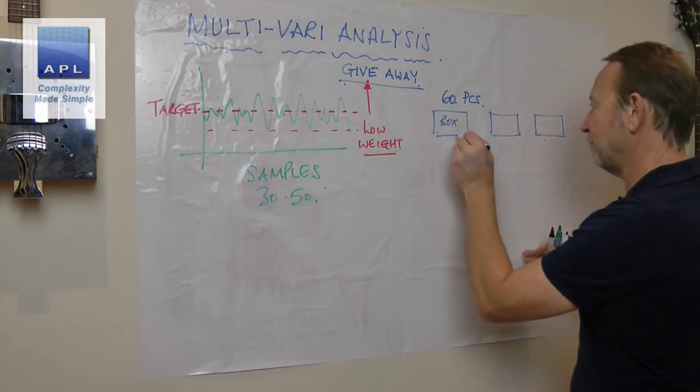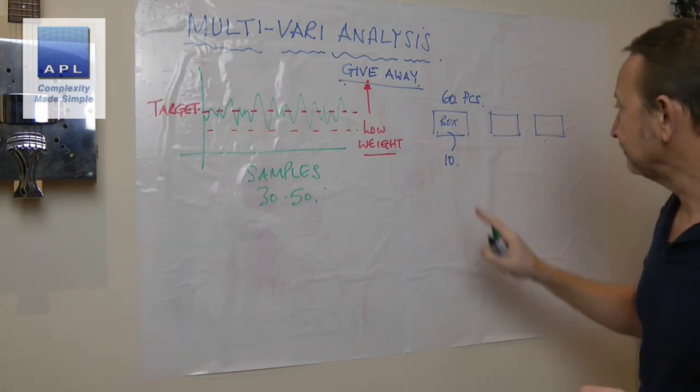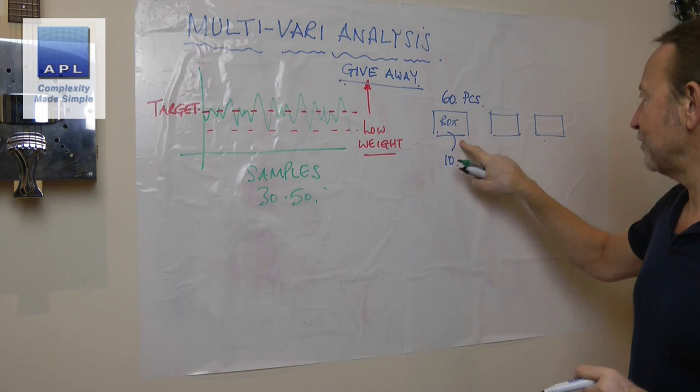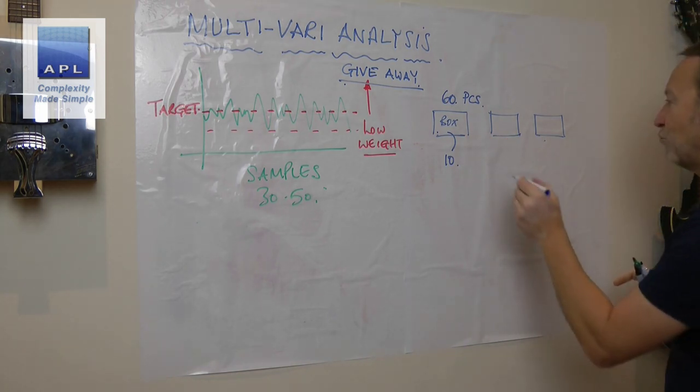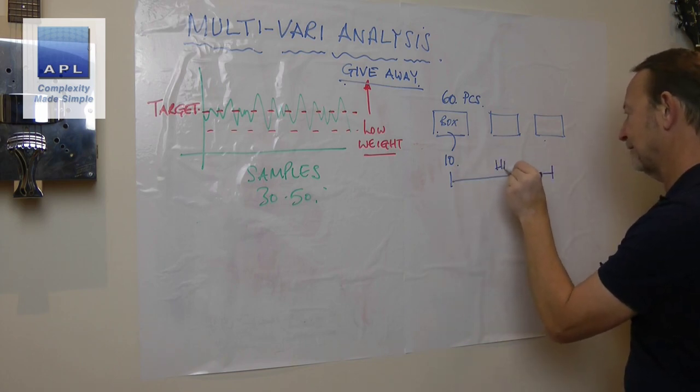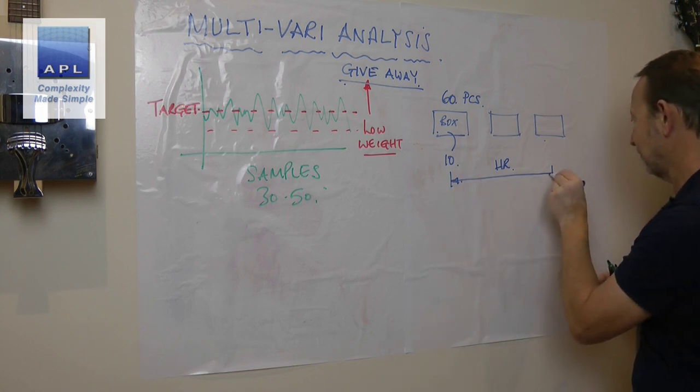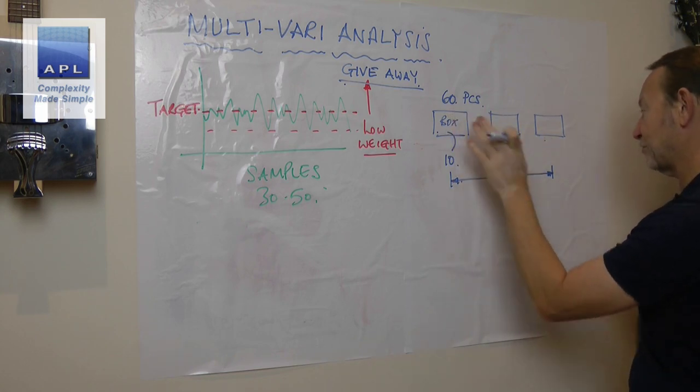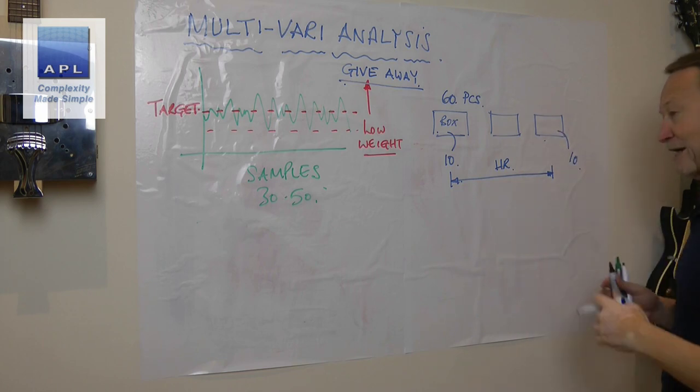They're making a box, a box, a box. I have no idea how fast they're producing these things. But how would I understand what's going on? Well, what I would do, I go to each box and out of the box I would take a sample of ten.